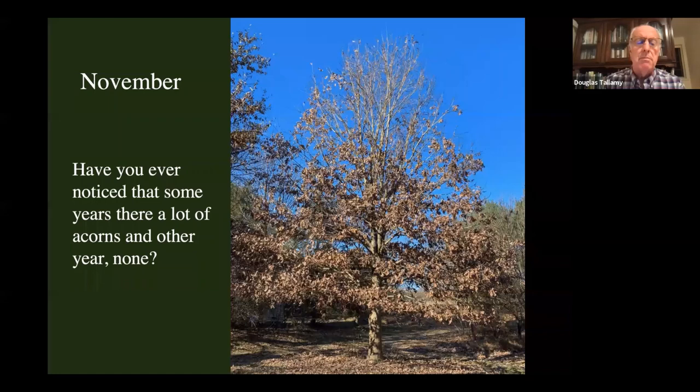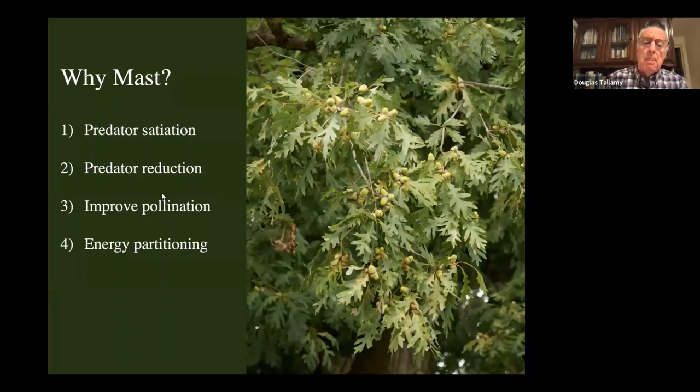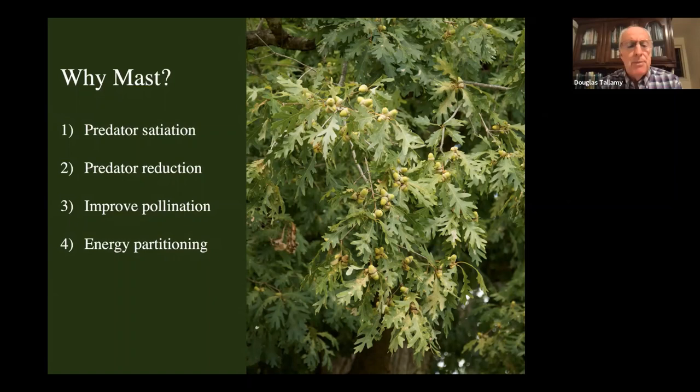In November you might have realized it was either a really good year for acorns or not. During good years — we call that a masting year — members of a particular group, like the white oak or red oak group, all produce their acorns at the same time. The question is why oaks do it so unevenly — a whole lot one year, then almost none the next.